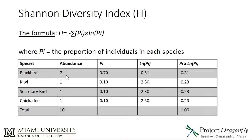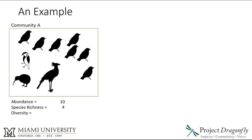For Community A: blackbirds — there were seven of them, and because there were 10 individuals total, the proportion was 0.7. The natural log of that is negative 0.51, and multiplied by the proportion itself gives negative 0.31. If you do this for each bird and then sum up the total, you get negative 1.00. Because of the negative in the formula, that becomes a positive, so the Shannon Diversity Index for Community A is 1.00.